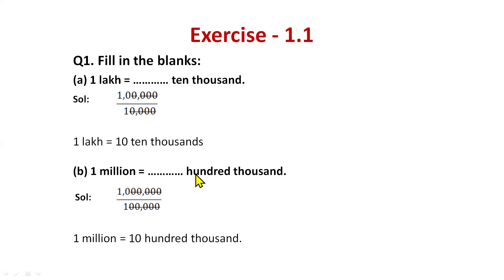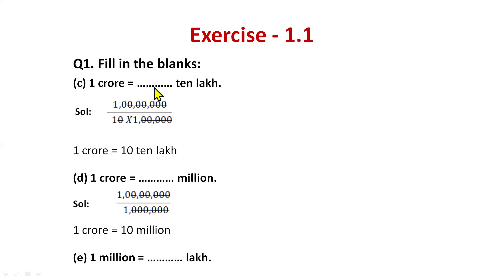Part (b): 1 million equals how many hundred thousands? Keep 1 million as the numerator and 1,00,000 as the denominator, cancel five zeros with five zeros, and you're left with 10. So 1 million equals 10 hundred-thousands. Part (c): 1 crore equals how many ten lakhs? Write 1 crore as numerator and 10 lakh as denominator, cancel zeros, and the answer is 10. So 1 crore equals 10 ten-lakhs.